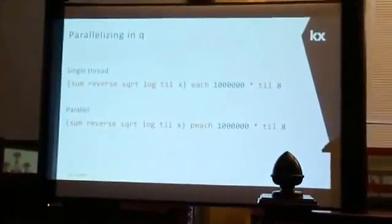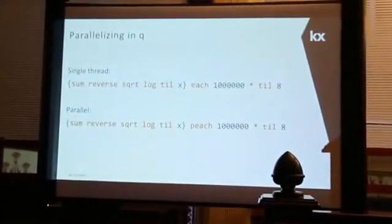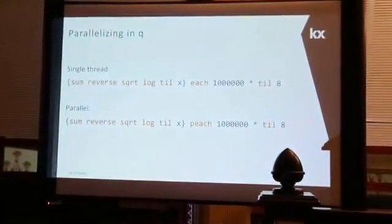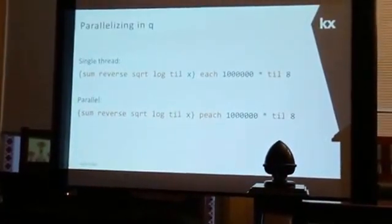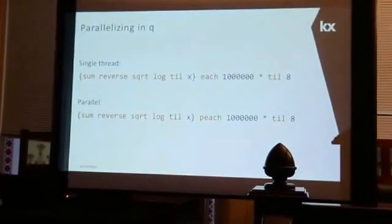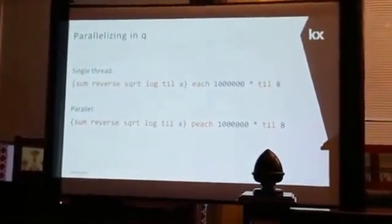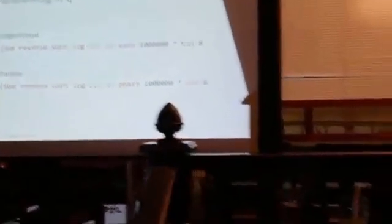KDB Plus has parallelization built in and it effectively comes for free. It's not like other languages with heavy, clunky multi-threading APIs where you spend 90% of your time writing threading code. In the example, we write a complex function passing a list of eight large integers. To parallelize it, we simply replace 'each' with 'peach' — parallel each. On an 8-core machine this runs almost linearly eight times faster, giving you parallelism out of the box for nothing.